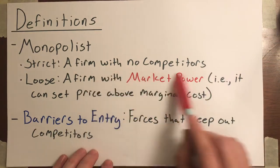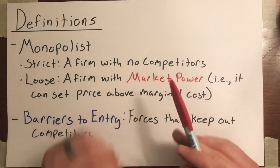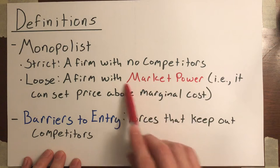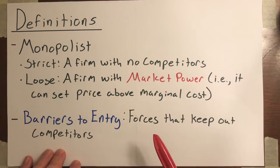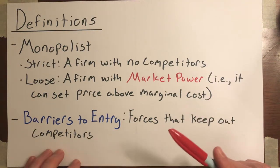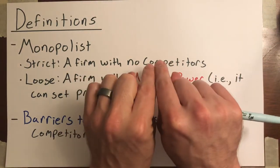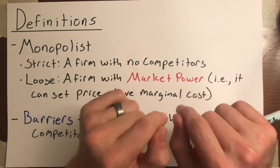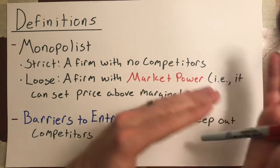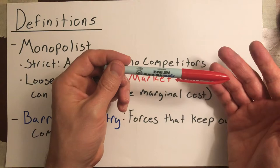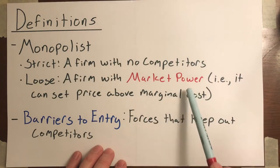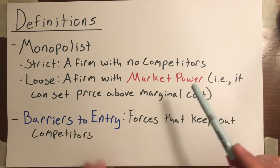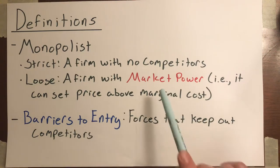Most economists don't require that there be no competitors — they just require that you be a large, significant firm in the market with not very many competitors. A looser definition of a monopolist is a firm that has what we call market power. Market power means it can set price above marginal cost without losing all of its customers. In a perfectly competitive market, if you set your price above marginal cost you immediately lose all customers. But if you have market power, there's no perfect substitute for what you sell, so you can raise prices and lose some customers but not all of them.